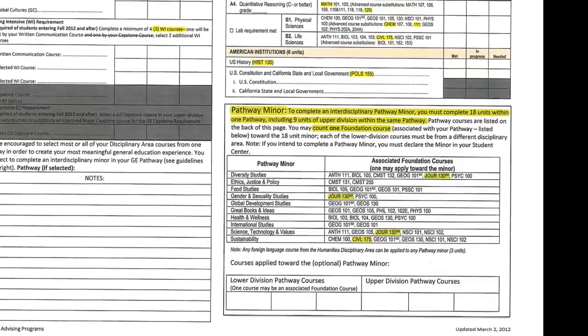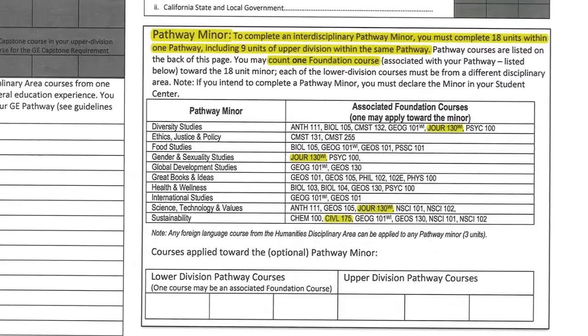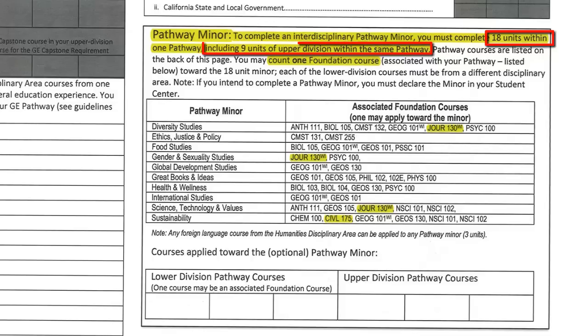If you are considering a pathway minor, you need to take 18 units within your chosen pathway, 9 of which must be upper division, within the same pathway.